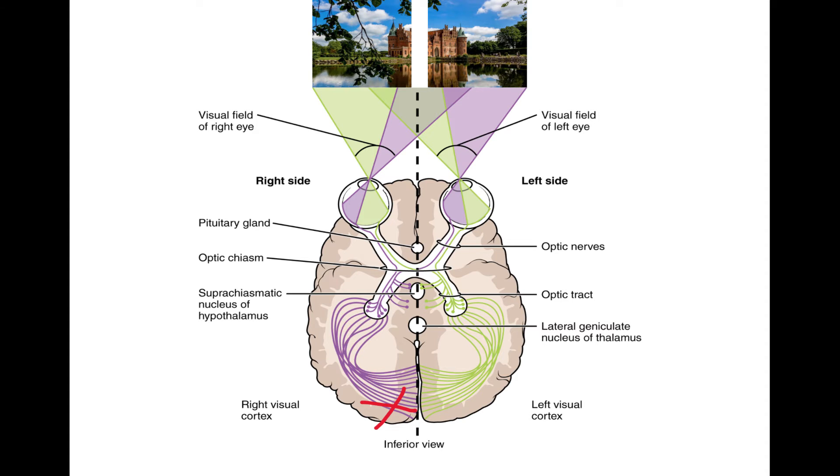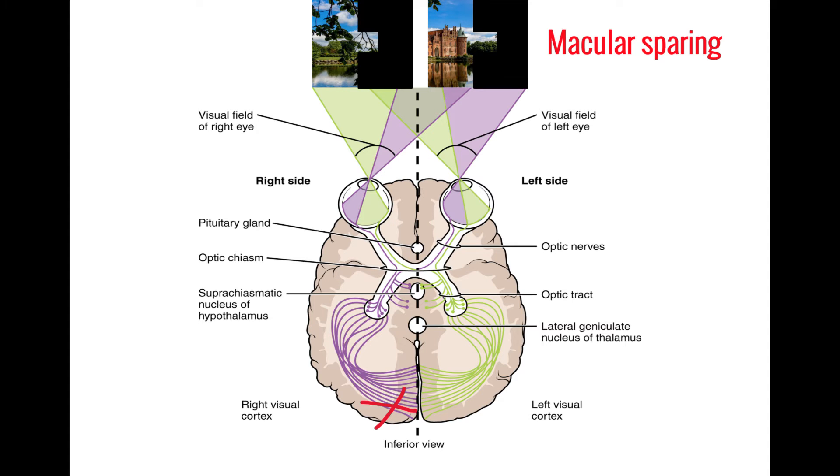Finally, damage to the visual cortex in the occipital lobe tends to produce a homonymous hemianopsia, or occasionally a quadrant anopsia. The key defining feature here is that the center of the visual field is preserved, a phenomenon known as macular sparing.